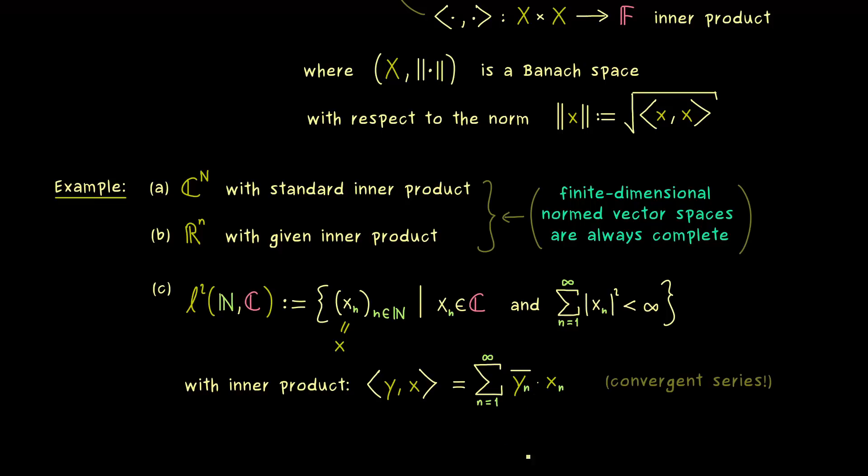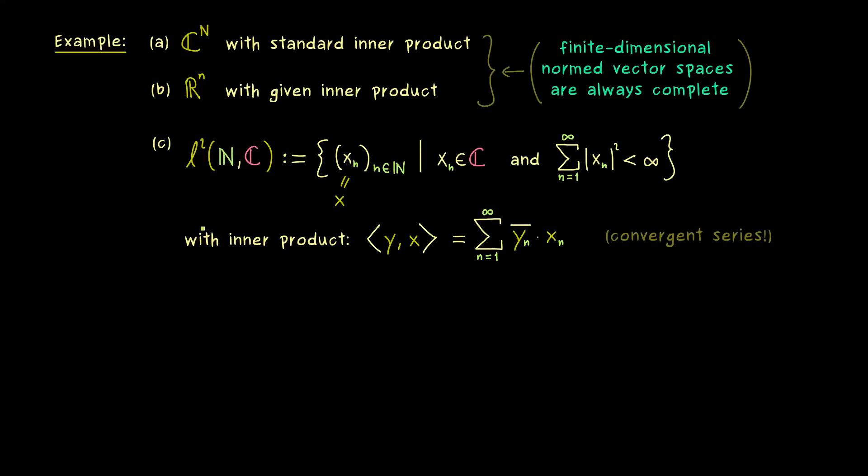Indeed, there we also discussed a lot about this nice space ℓ². But now it turns out that one can generalize this example even more. And what we need there is a so-called measure space. It consists of three parts, namely a set Ω, a sigma algebra A, and a measure μ. So if you want to see the actual definition of such a measure space, you should watch my measure theory series. Here in this series we will just use the fact that in any measure space we can define the general Lebesgue integral.